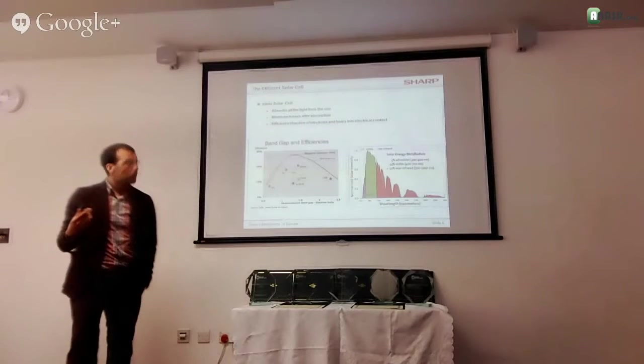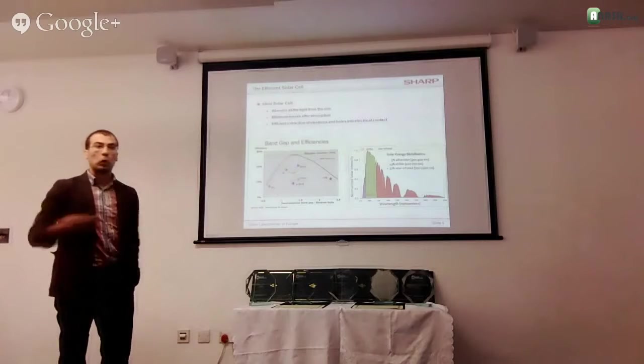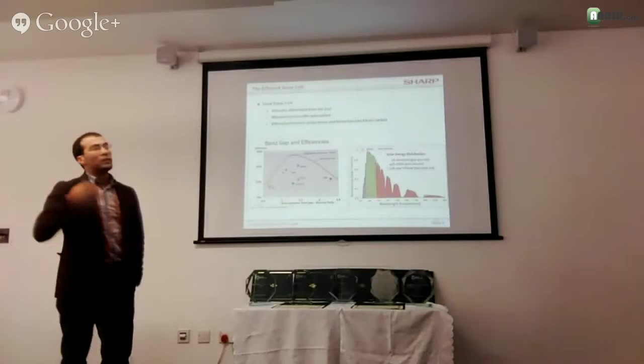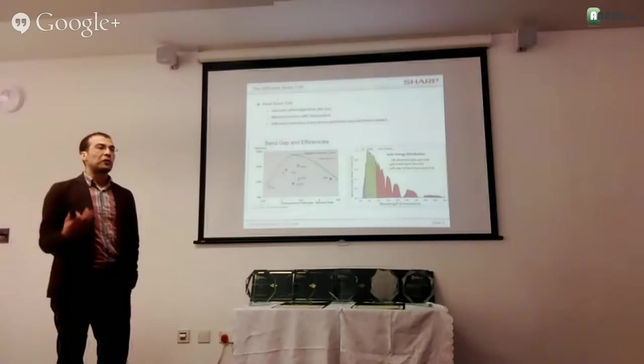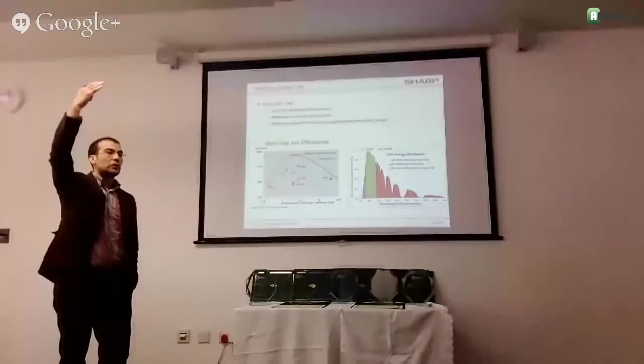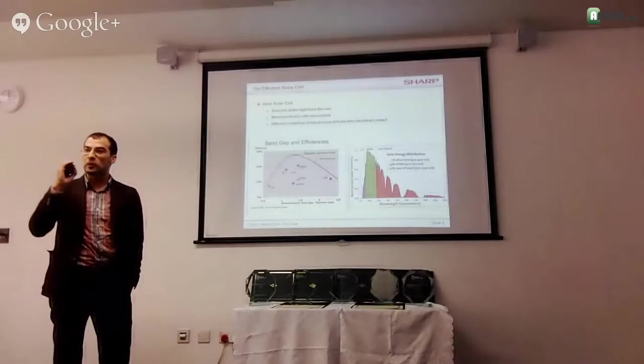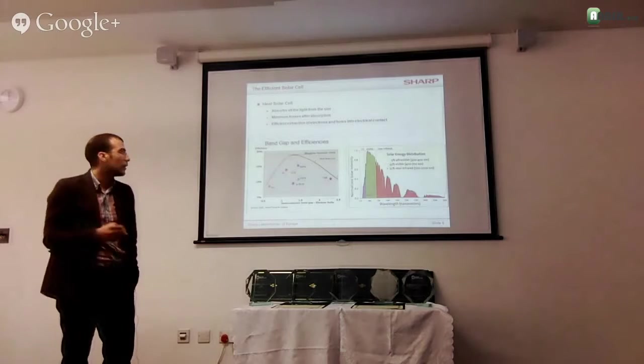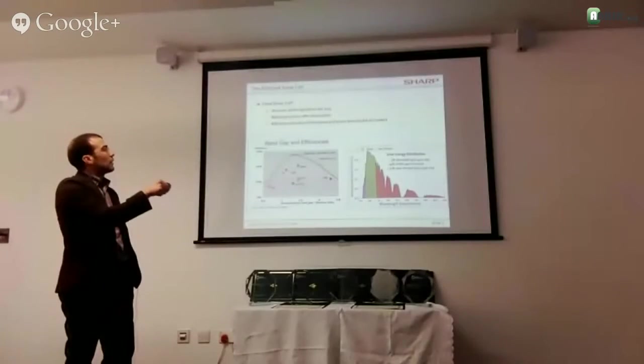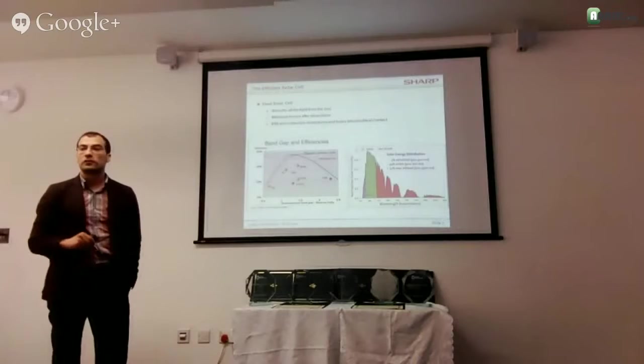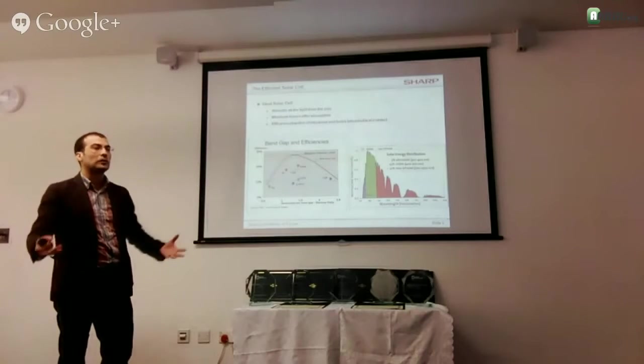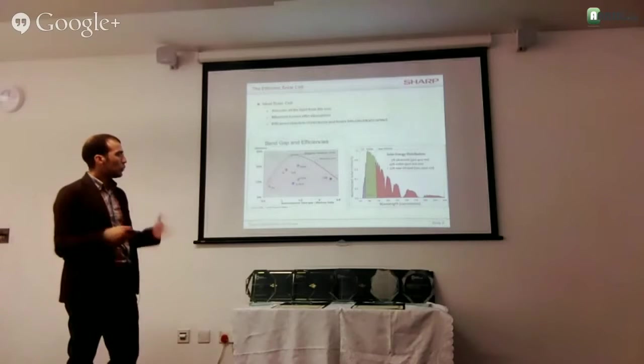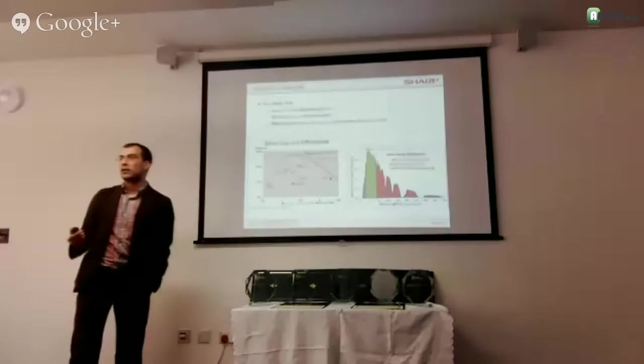Now the ideal solar cell that we are looking for is a solar cell that absorbs all the light. We want all the light to be absorbed so that we have the maximum number of electrons generated. We want there to be minimum losses. We don't want to generate electrons high above the conduction band and then lose energy as heat. We want it to be the right band gap so that we can absorb efficiently the light, and we obviously want the efficient extraction of electrons and holes, good contact, and minimum resistance.